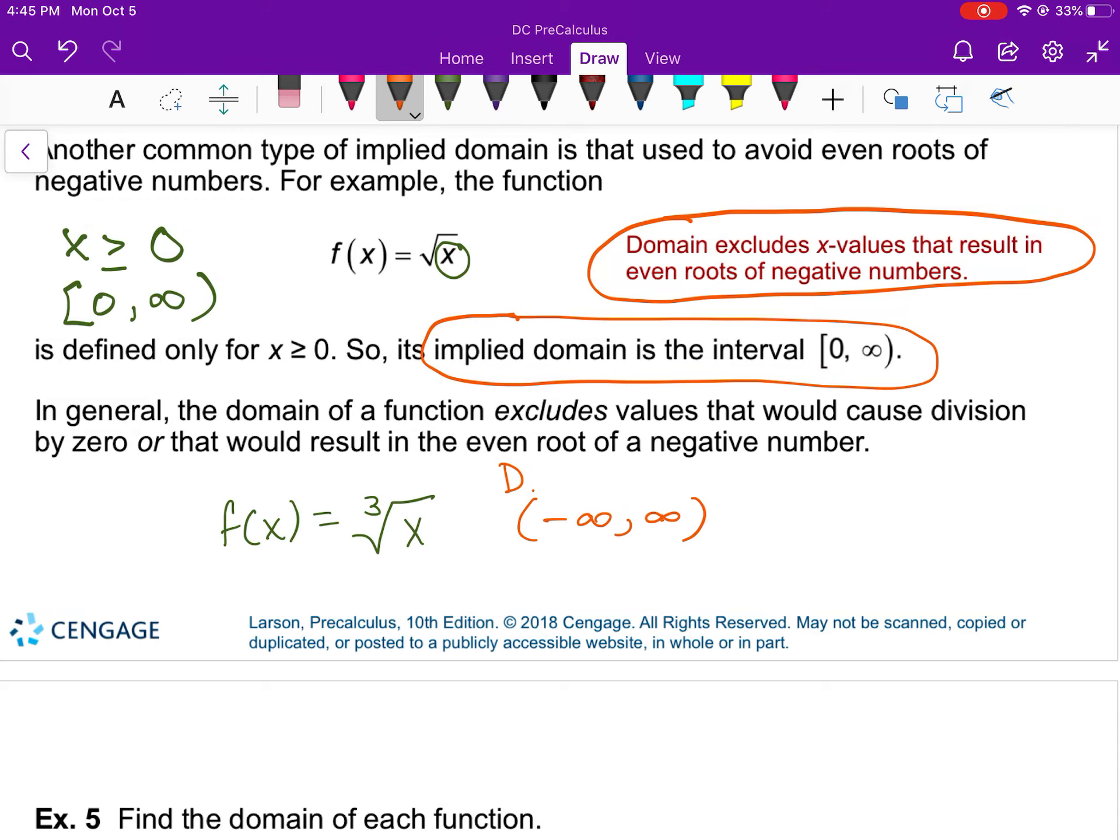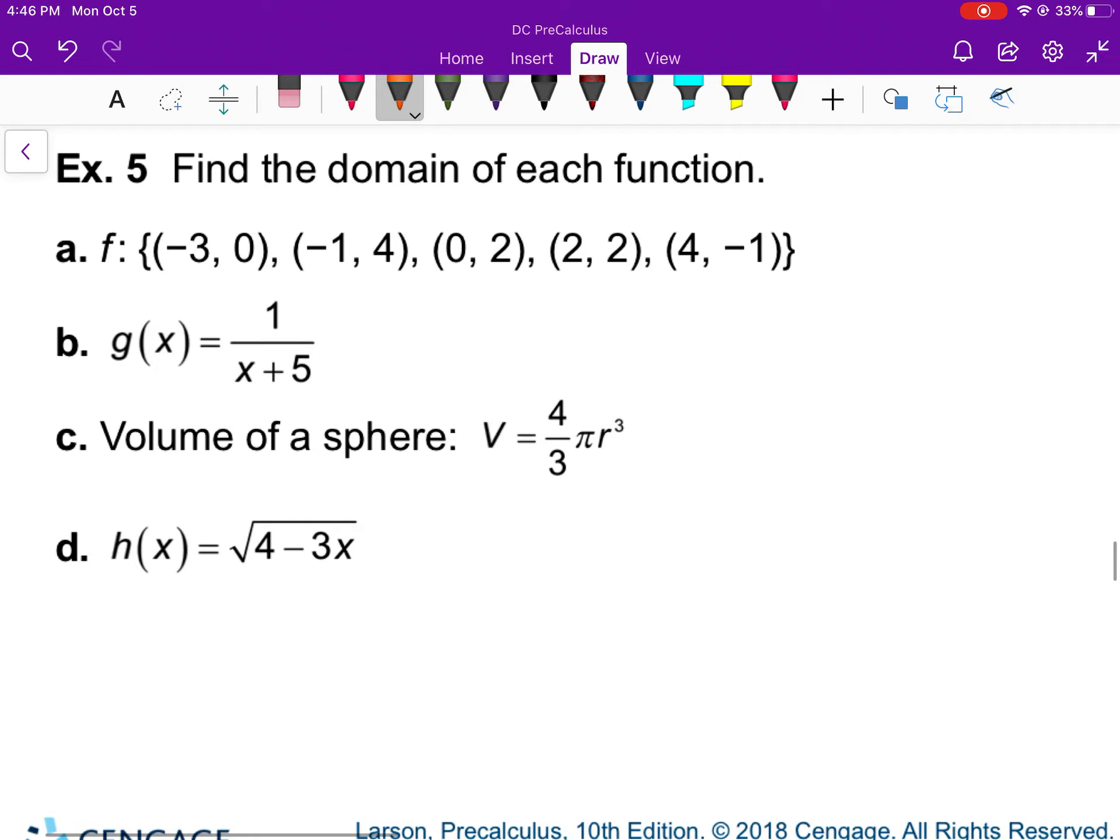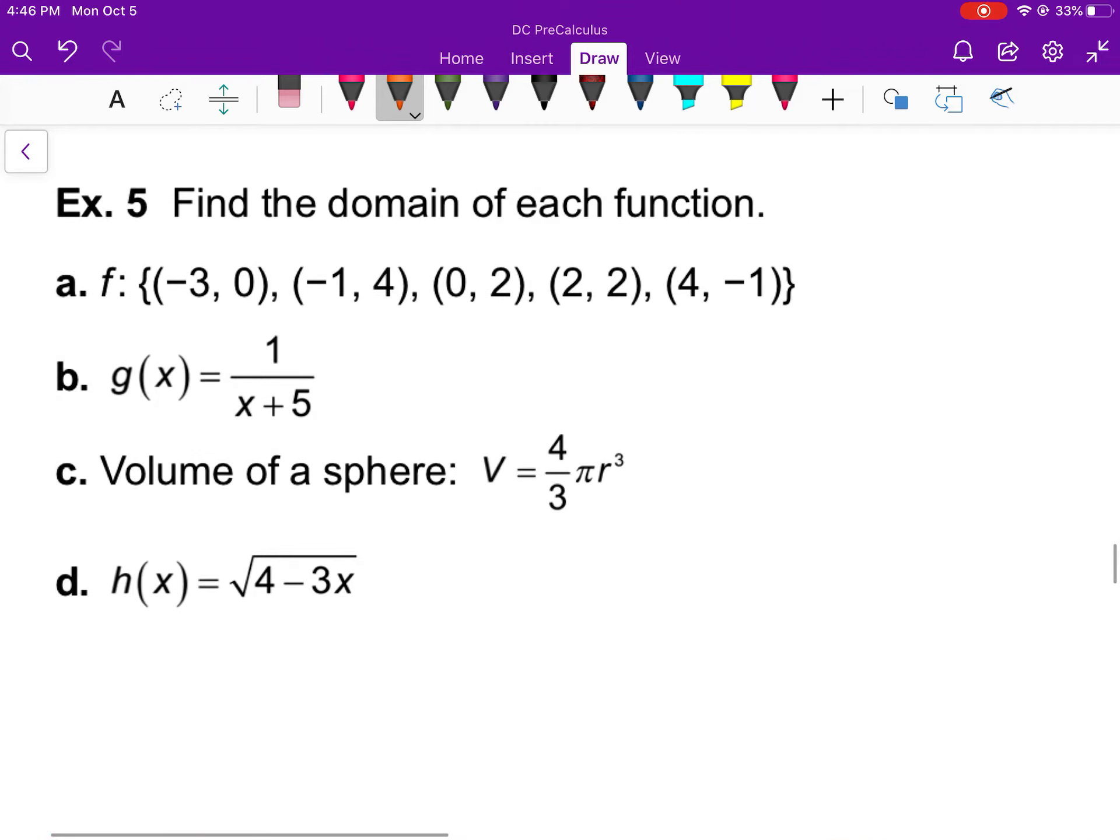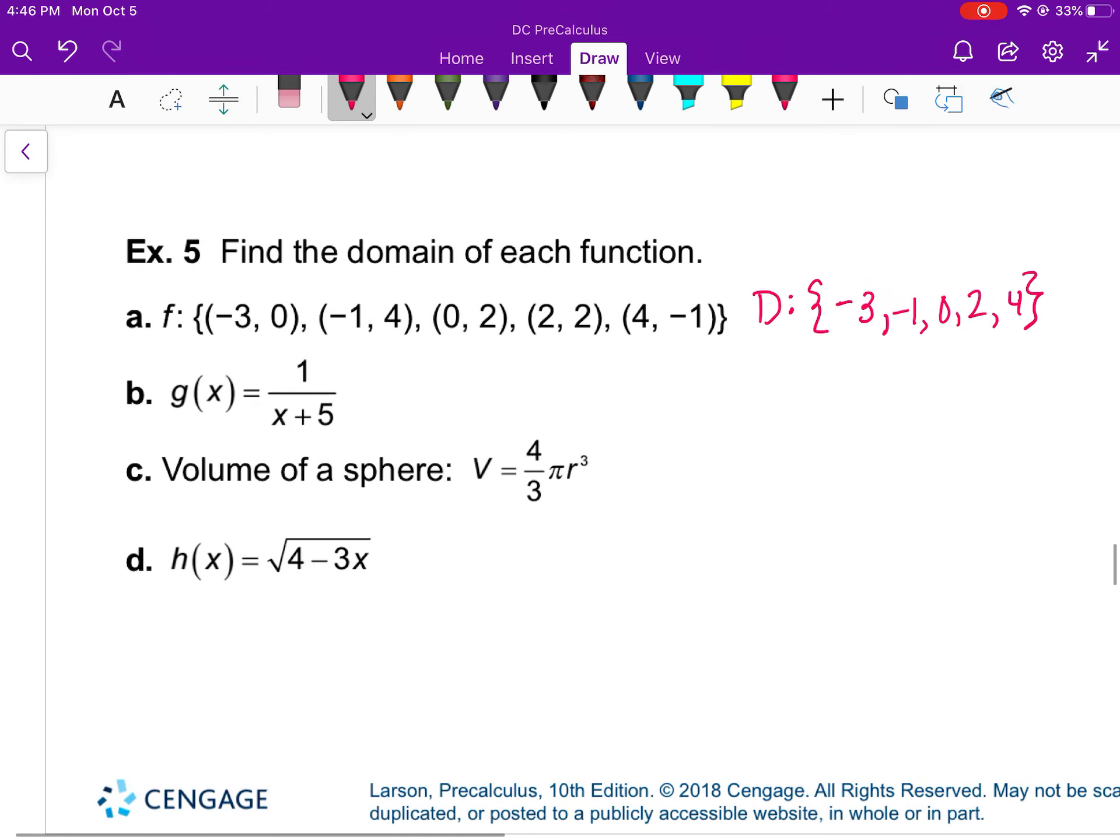So all reals for your domain for this one. But if I turn that into a square root or an even root, then I have to restrict my domain. For example 5, you're just going to be talking about your domain for each function. For this first one, it's going to be the set of all your x values: negative 3, negative 1, 0, 2, and 4. You must use the brackets that are shown.